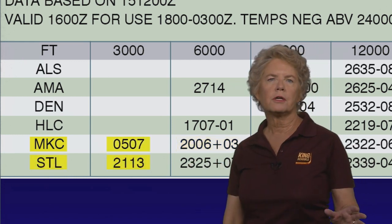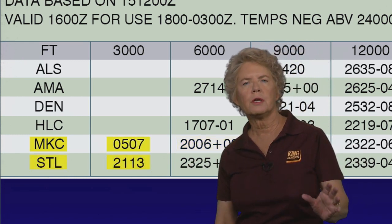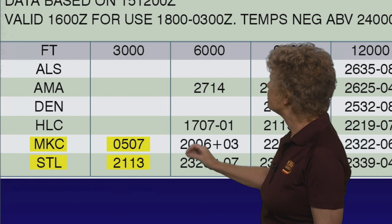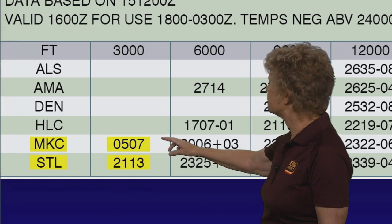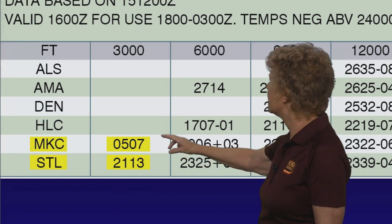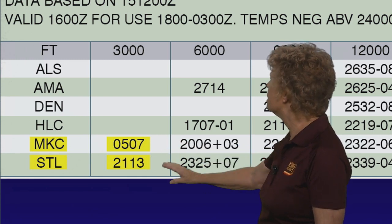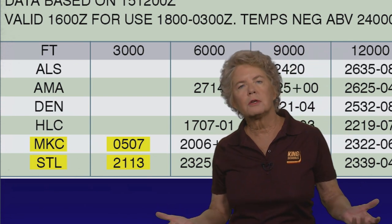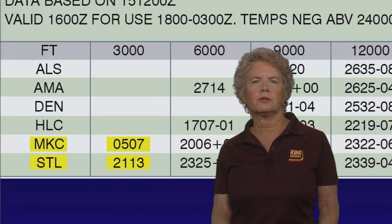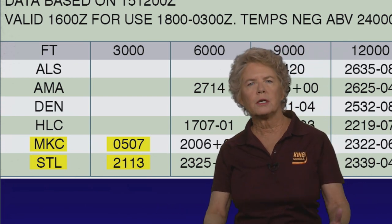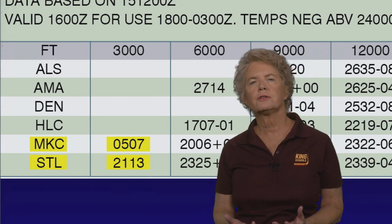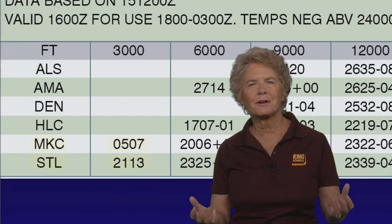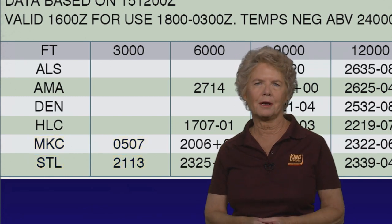Notice that at the 3,000 foot level, there are no temperatures for either Kansas City or St. Louis. That's because they don't give temperatures in the winds and temperatures aloft forecast when you're close to the ground.